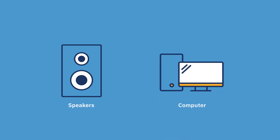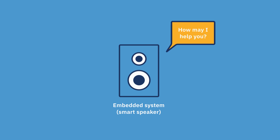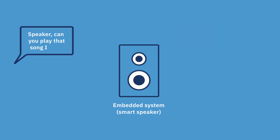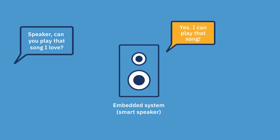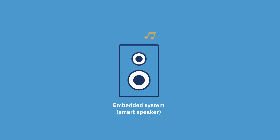Traditionally a speaker has been an analog device — a device made up purely of hardware. When you embed a computer into it, it becomes an embedded system, so that purely analog device now has the functionalities of a computer. That allows you to do things like convert your voice into a software command, stream media from the internet, access your emails, and even tell you the weather.